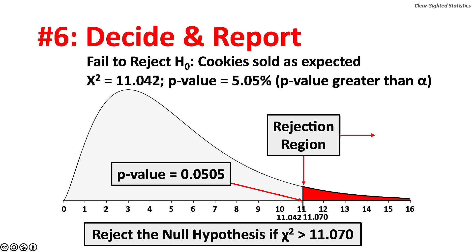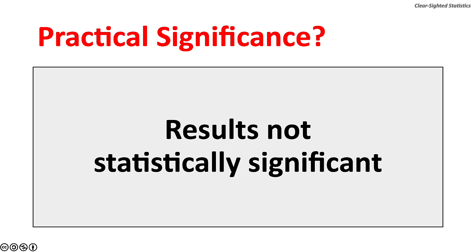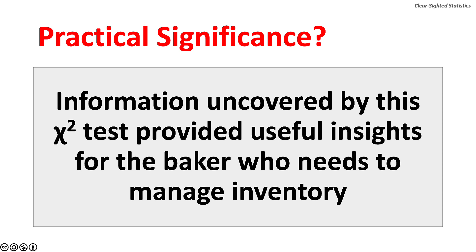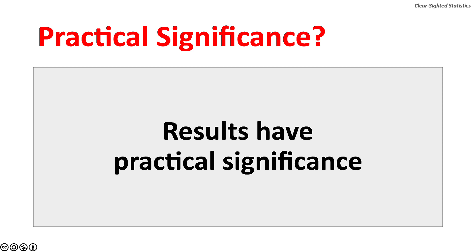This is great news for the baker who wants to manage inventory better. The effect size of 17.51% is weak, but the information provides useful insights. The results tell the baker she is getting better at managing inventory, and therefore the results have practical significance. The baker should continue to monitor sales to further refine inventory management.